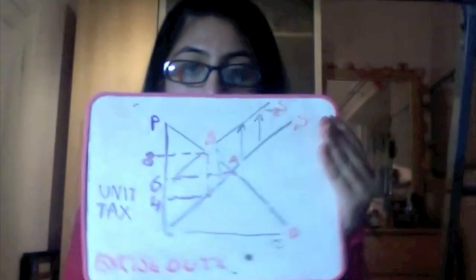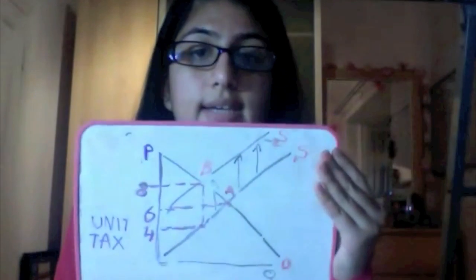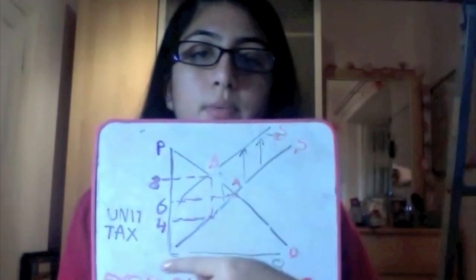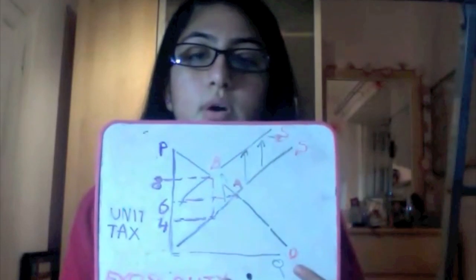So let's look at the economics of this. Let me get my board. OK, so this is a tax diagram. We have price, we have quantity, we have demand and supply.